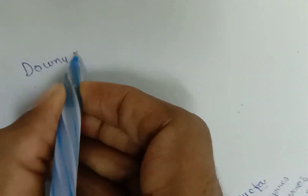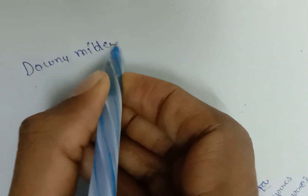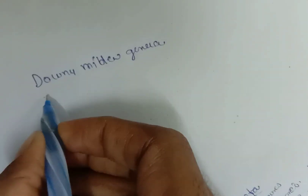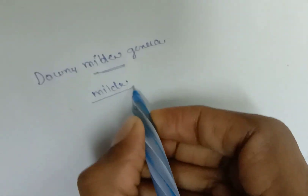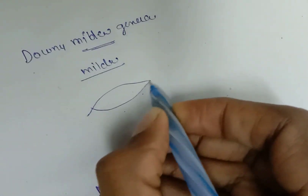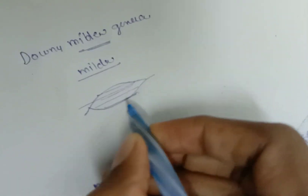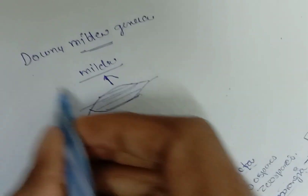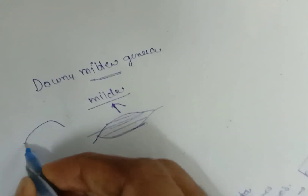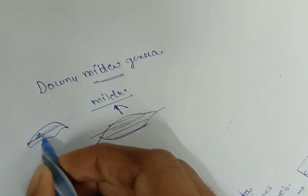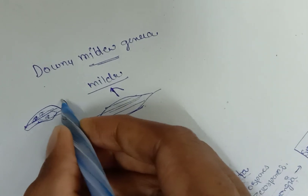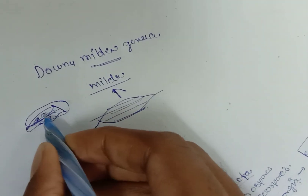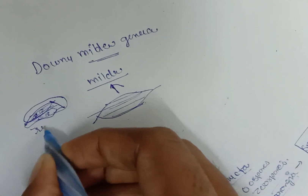Today we are going to discuss about Downy Mildew Genera. Mildew is any disease that spreads throughout the leaf — the total leaf is affected. Downy Mildew specifically appears on the undersurface of the leaf at earlier stages as patches, which then coalesce and spread to the upper surface, resulting in leaf shedding.